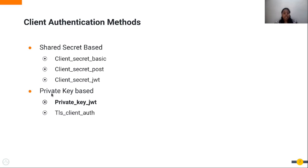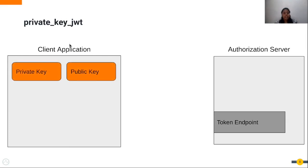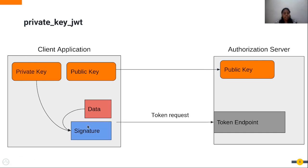For private-key-based mechanisms we have private_key_jwt and TLS client authentication. Today we are looking into private_key_jwt more deeply. Similar to the client_secret_jwt mechanism, the client application generates a private key and public key, shares the public key with the authorization server, then prepares the data with the required and optional claims and uses the private key to sign a signature.